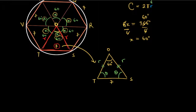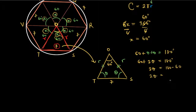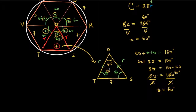The sum of angles in a triangle is 180 degrees. So 60 + theta + theta = 180 degrees, giving 2 theta = 120 degrees. Dividing both sides by 2, theta equals 60 degrees. So the angle at T is 60 degrees and the angle at S is 60 degrees.